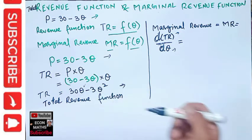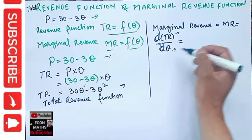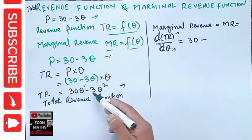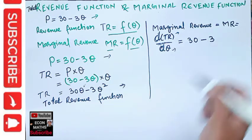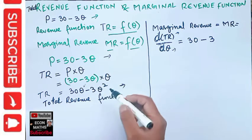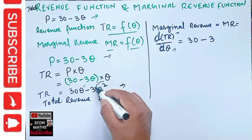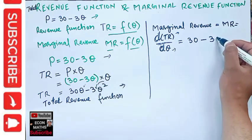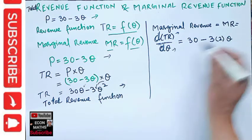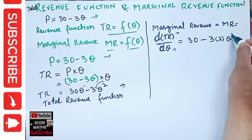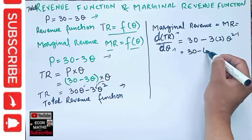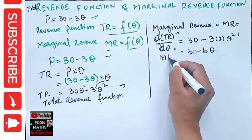The derivative of Q is 1, so we get 30 times 1, which equals 30. Then we have the 3 from the second term. The derivative of Q squared is 2Q, because the exponent 2 becomes the coefficient, giving 3 times 2 times Q to the power 2 minus 1, which is 6Q. So our marginal revenue function is MR = 30 minus 6Q.